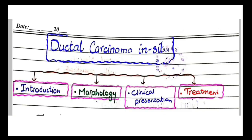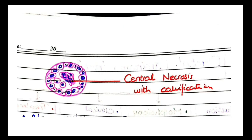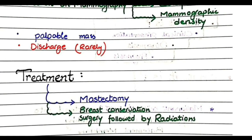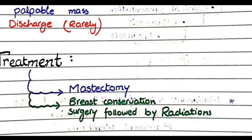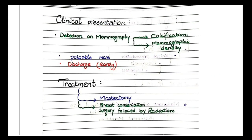For treatment of ductal carcinoma in situ, we can either perform mastectomy — removal of the whole breast — or we do breast conservation surgery followed by radiation. Breast conservation surgery is a type of surgery in which instead of removing the full breast tissue, we only remove the part of the breast involved by the tumor. This must be followed by radiation, or alternatively we can perform mastectomy.